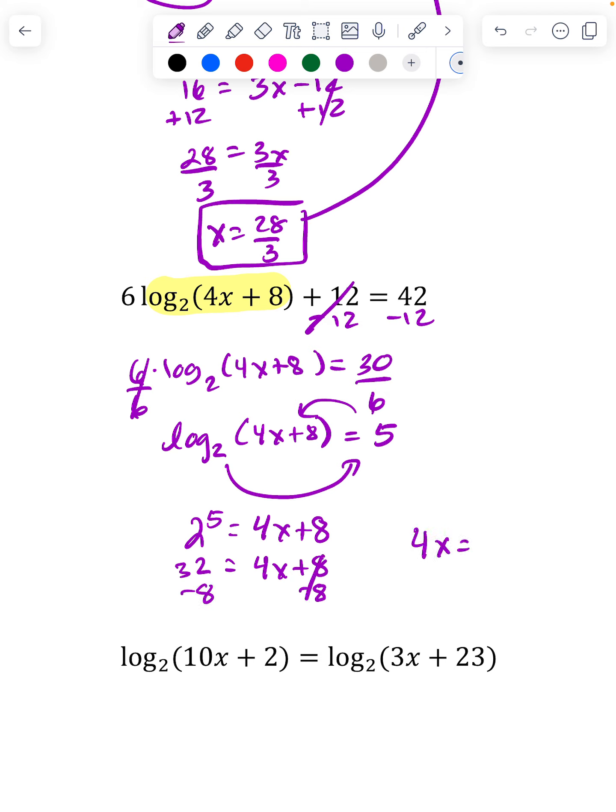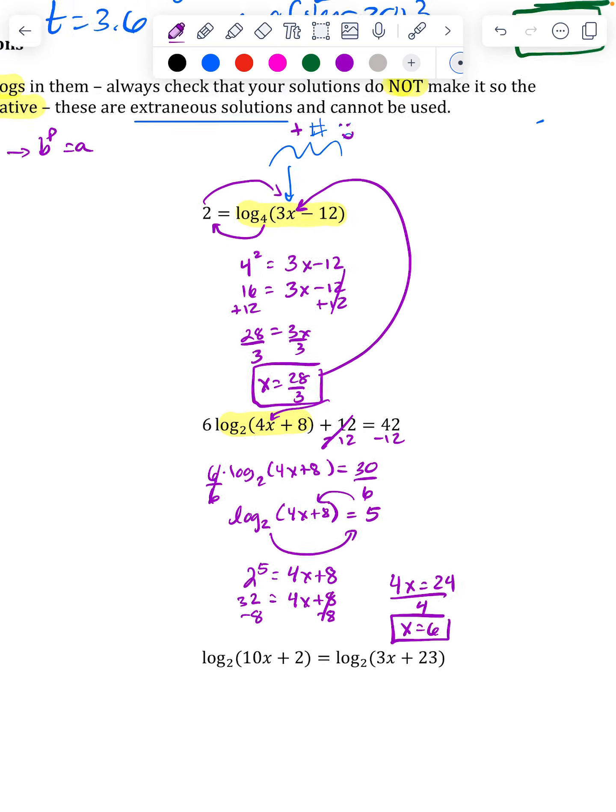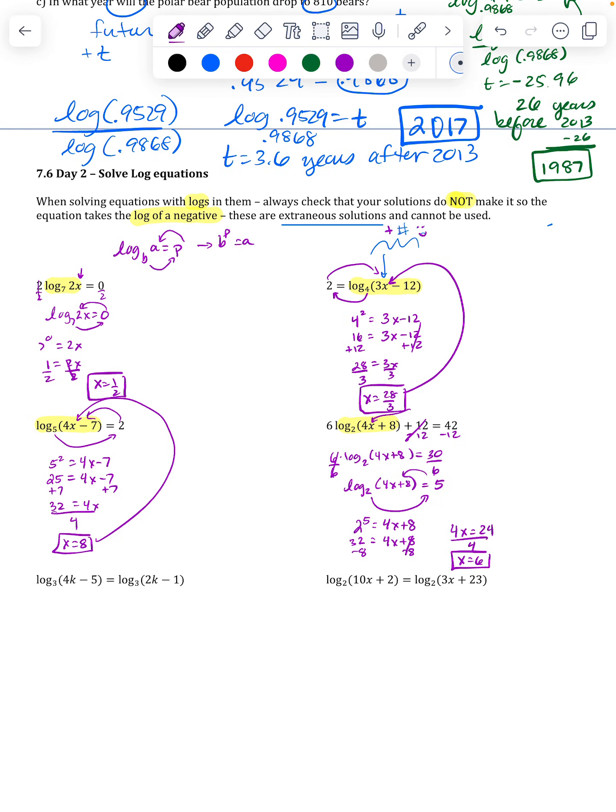So 32 minus 8 is going to land me at 24, and if I divide by 4, I get 6. And certainly if I put a 6 in there, I'll get 24 plus 8 which is not negative. So in all of these problems we had just logs on one side.